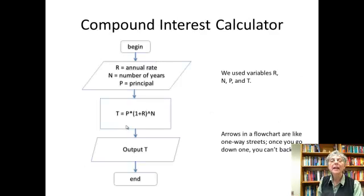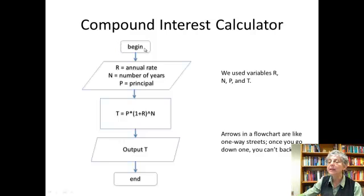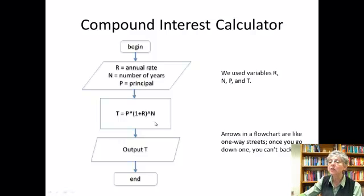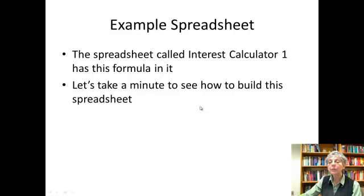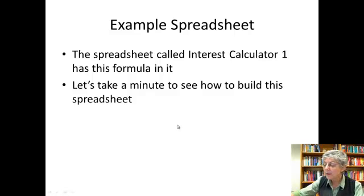Here's the flowchart for my compound interest calculator. I start with a round-corner box for begin, then a parallelogram showing the input with the assigned values for the variables, then the formula in a square-corner box for the computation, then I output the total, and that's the end. There's a spreadsheet called Interest Calculator 1 on the site that has this formula in it. We'll resume with a different video — see you next time.